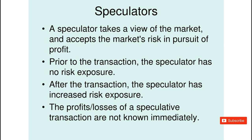Let me give you an example. We get an announcement of a character like, say, Virus. The speculators can do multiple things — they can assume that this character is going to be hot. By speculating on the market, there's no risk involved, and even the risk involved initially can be very small. Because what does it say next? After the transaction, the speculator has increased risk exposure.